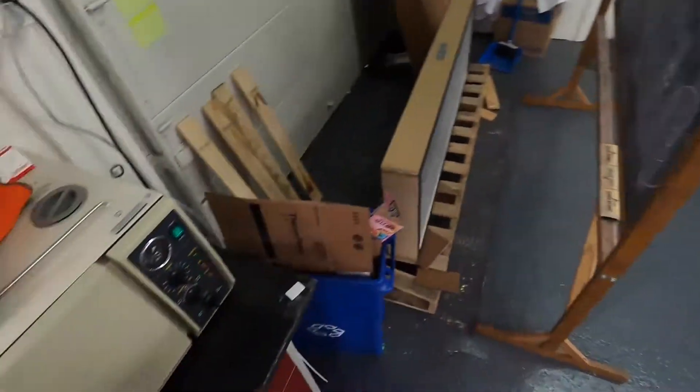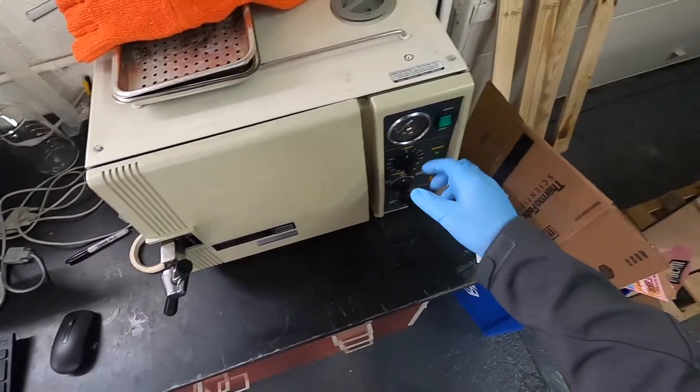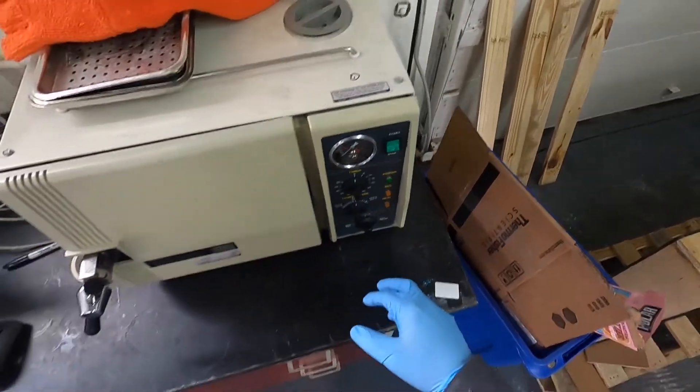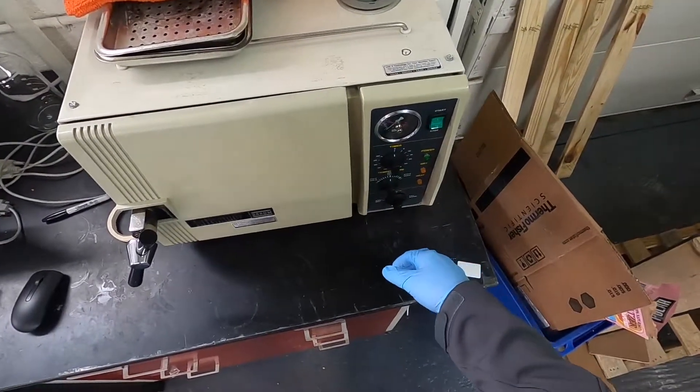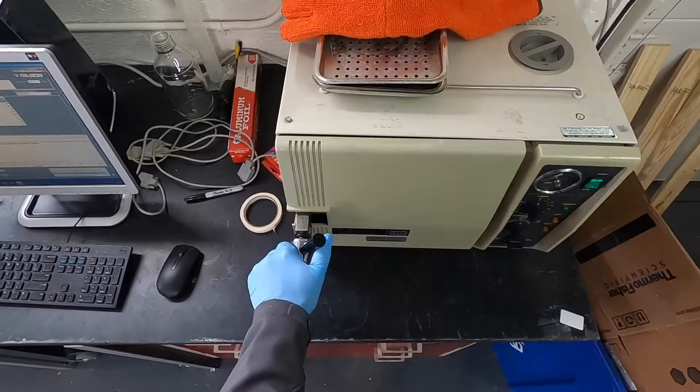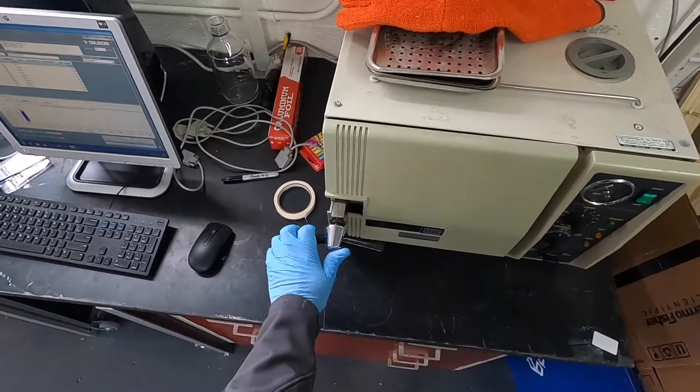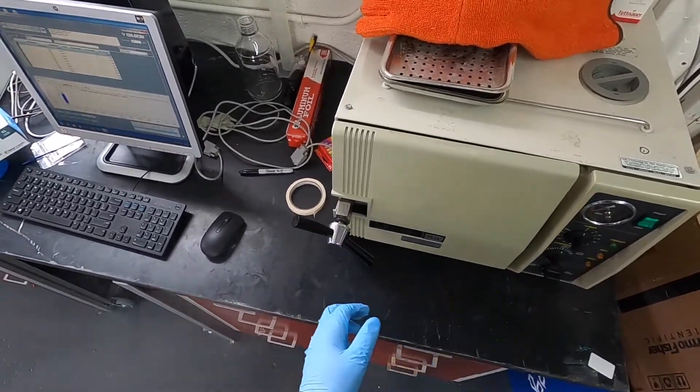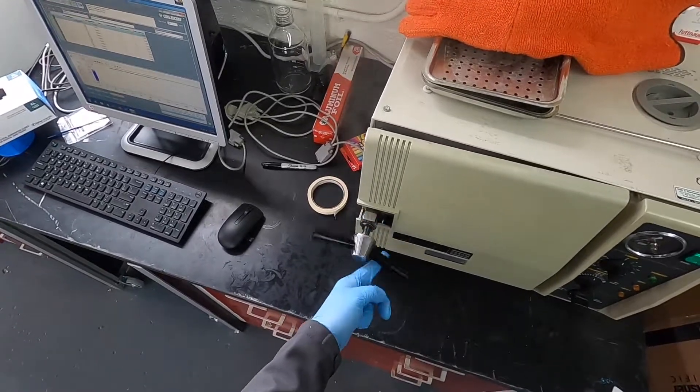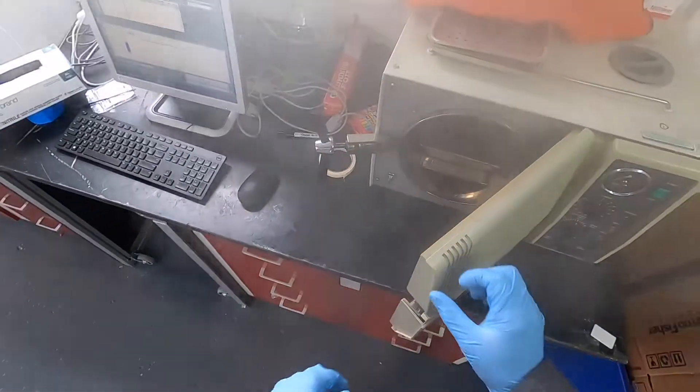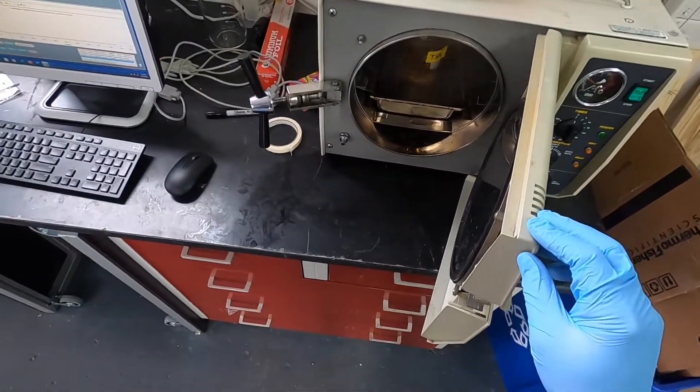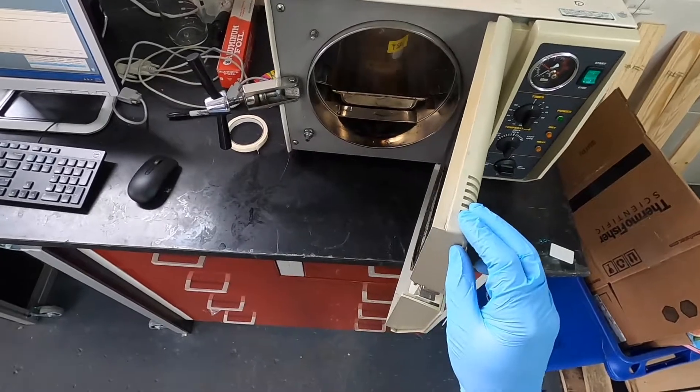So once the autoclave is done, it's reached one bar, 15 psi for 15 minutes. We exhaust it, just let some of the excess steam out. There's still going to be some in the chamber.